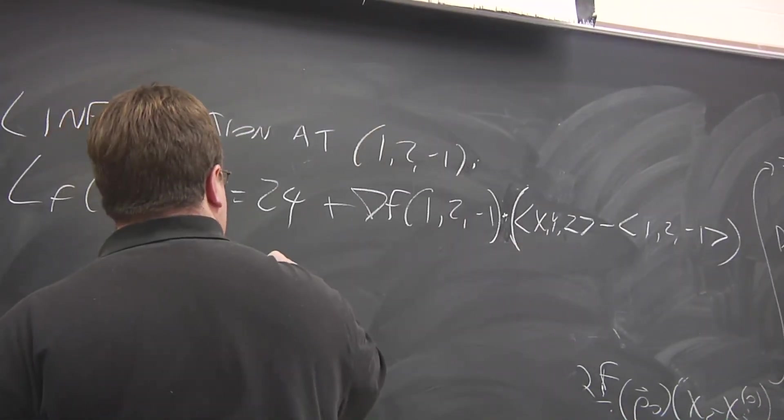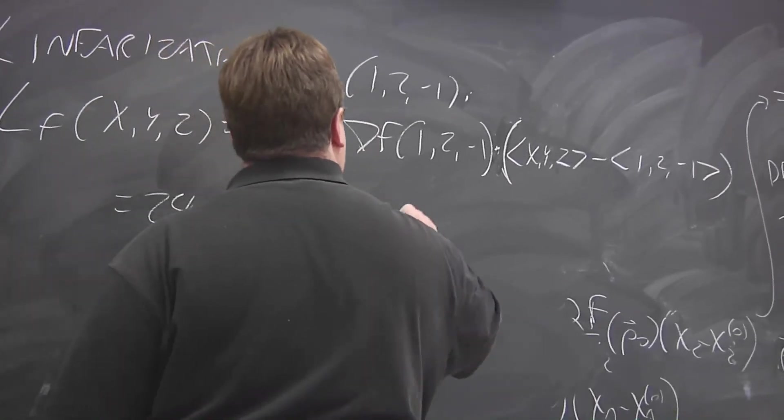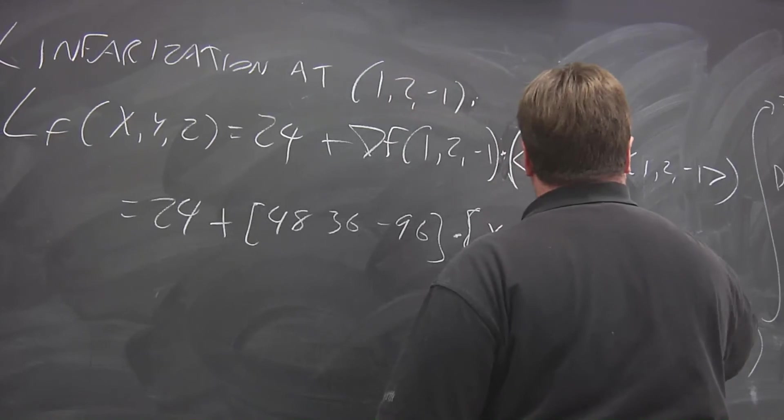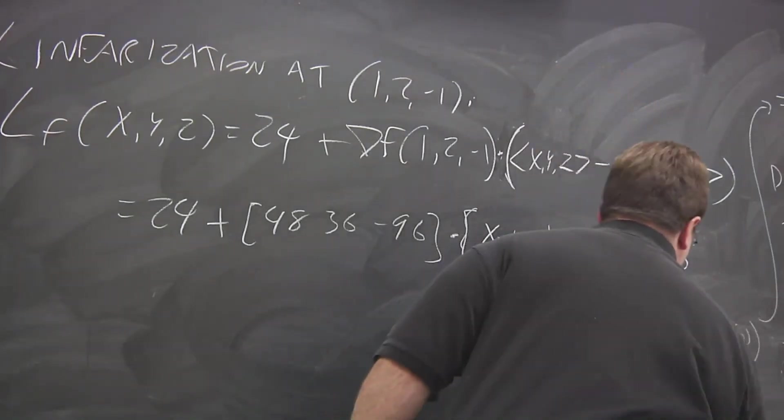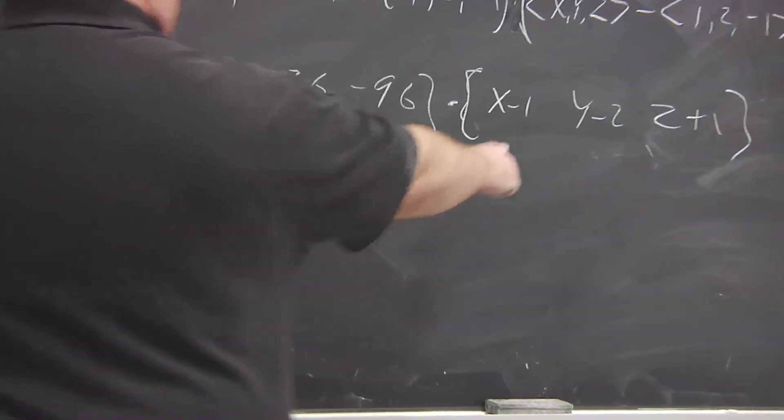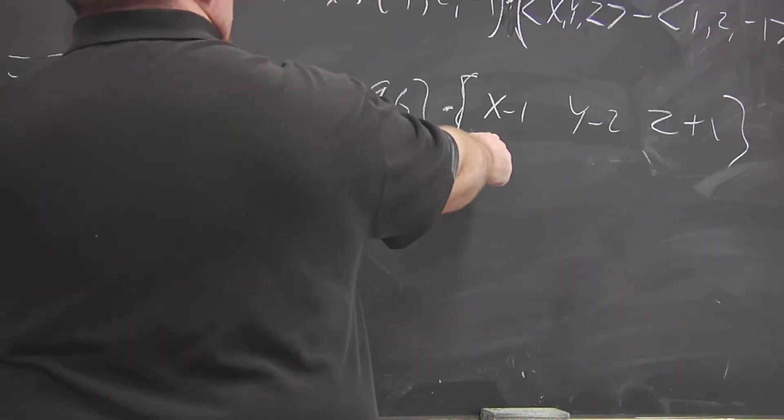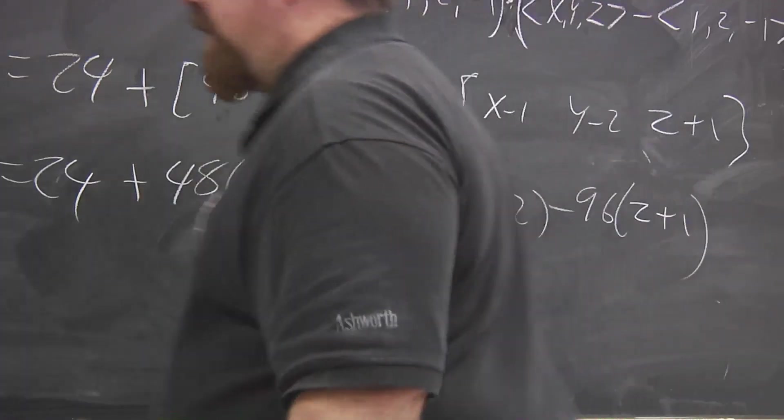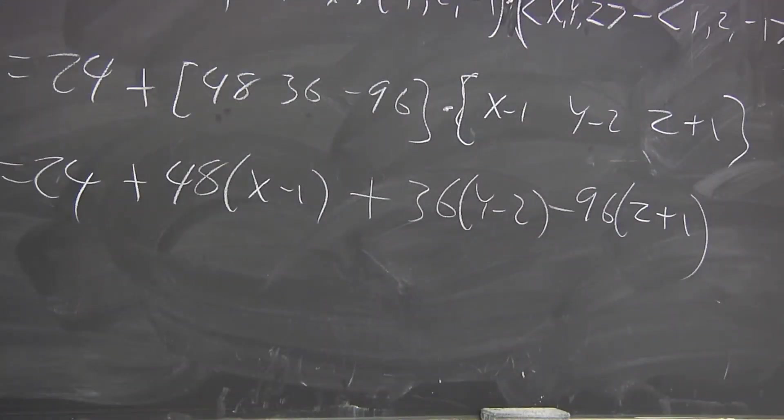So we have our vector, 48, 36, -96. Dot product with (x-1, y-2, z+1). And then we can work out all of that. So we're going to multiply corresponding components. So 48 times (x-1), 36 times (y-2), and add them all up. And that is our linearization around that point.